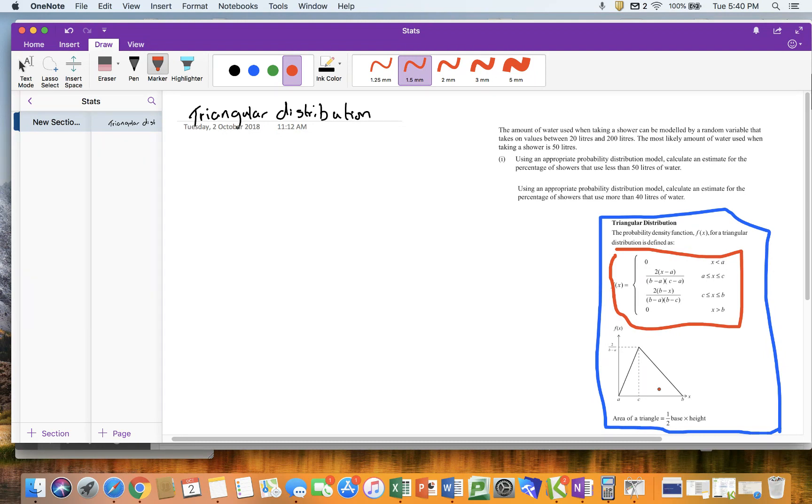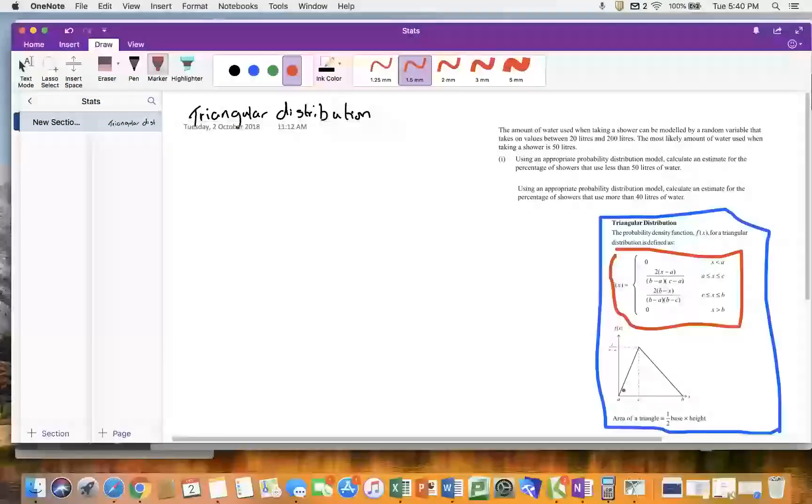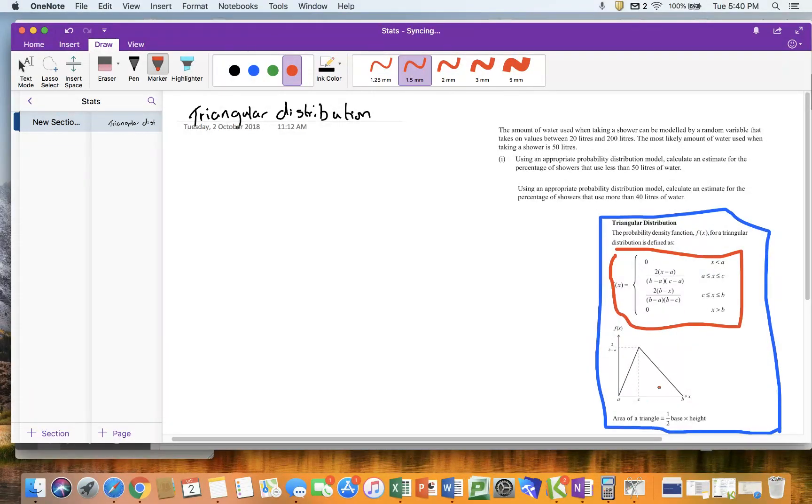Now, naturally, that causes a bit of a problem when I've got a value between here and here. You'd have to work out the area underneath to the left, work out the area to the right, and then subtract both of those away from 1. But that's just using some probability, rather than doing anything that's particularly difficult. Okay, so with your triangle distribution, it's continuous. So that's the first thing.